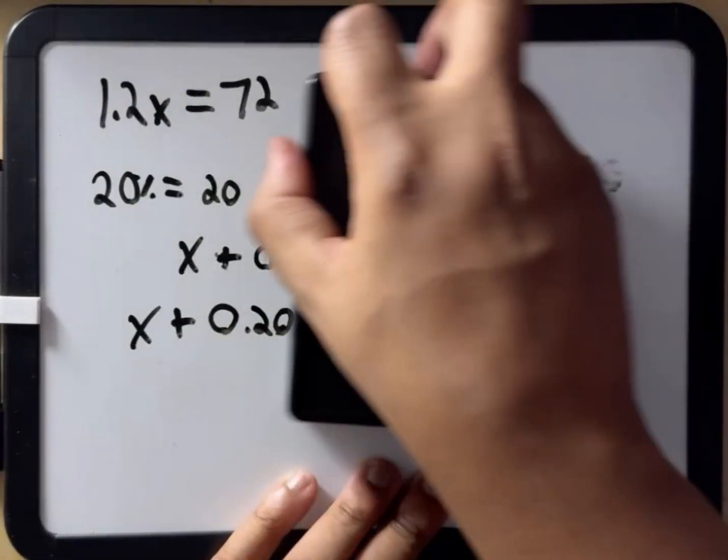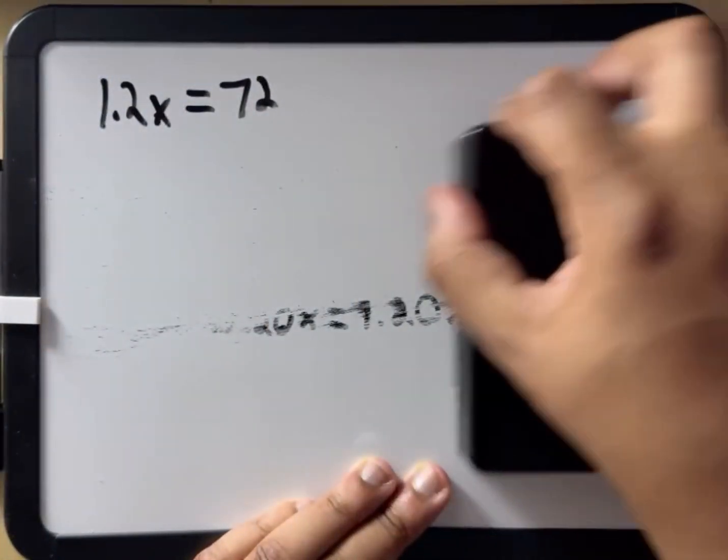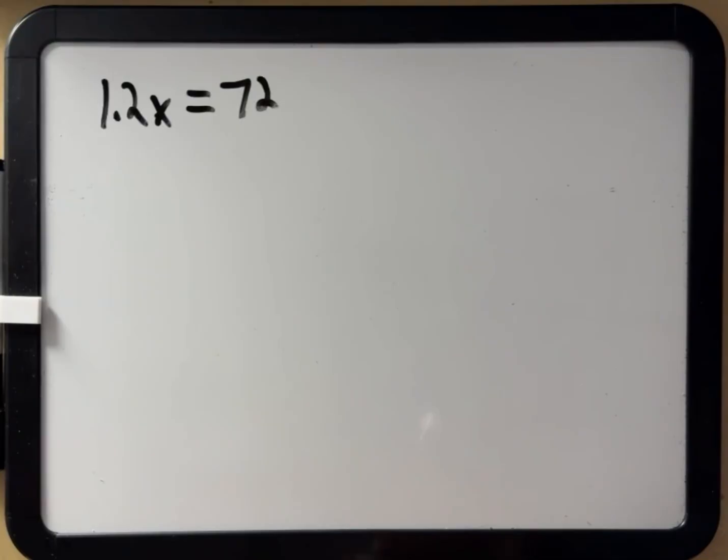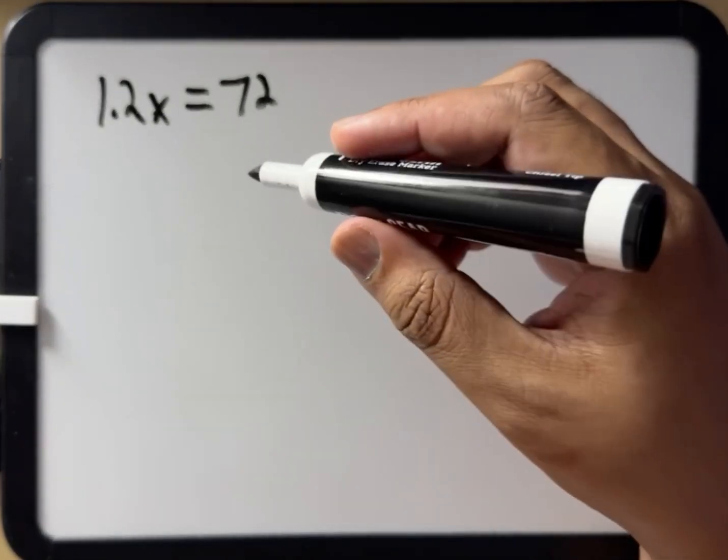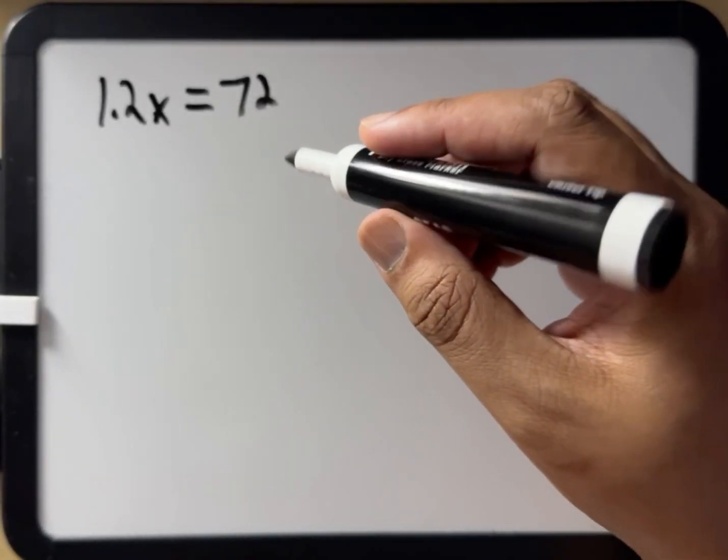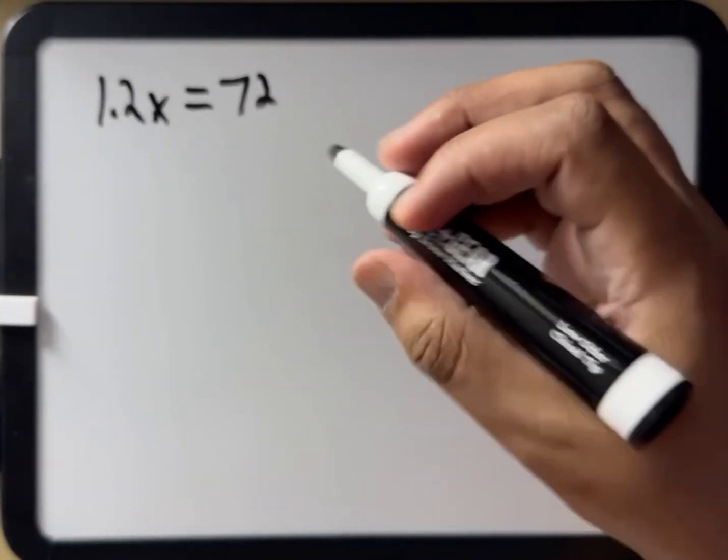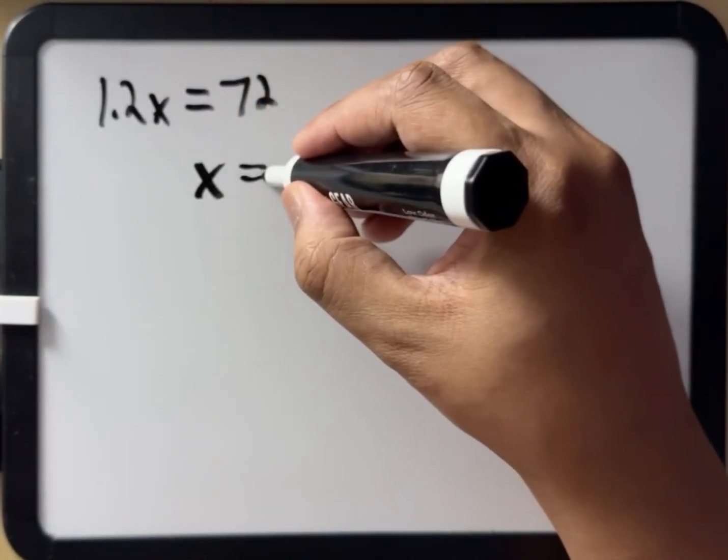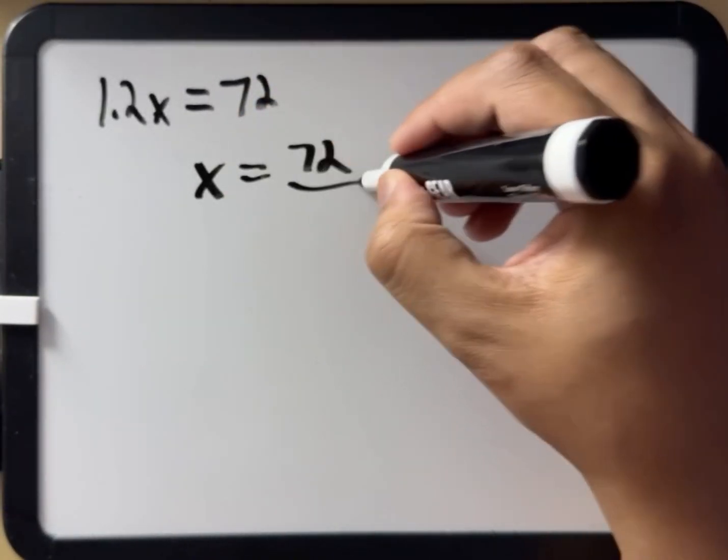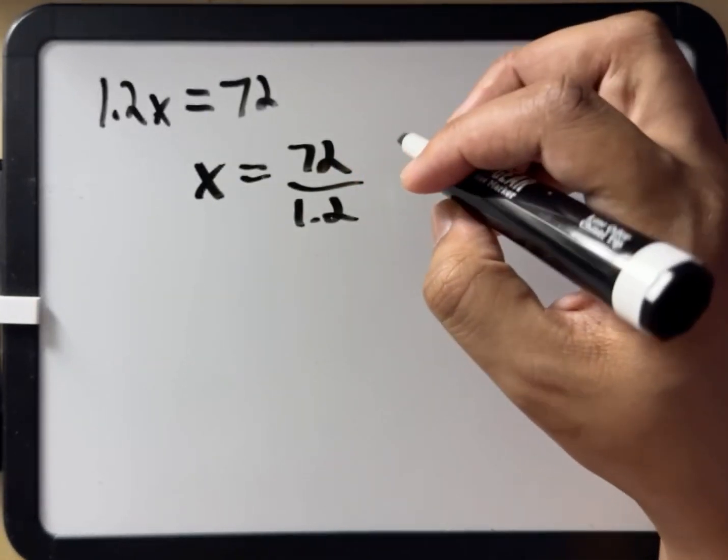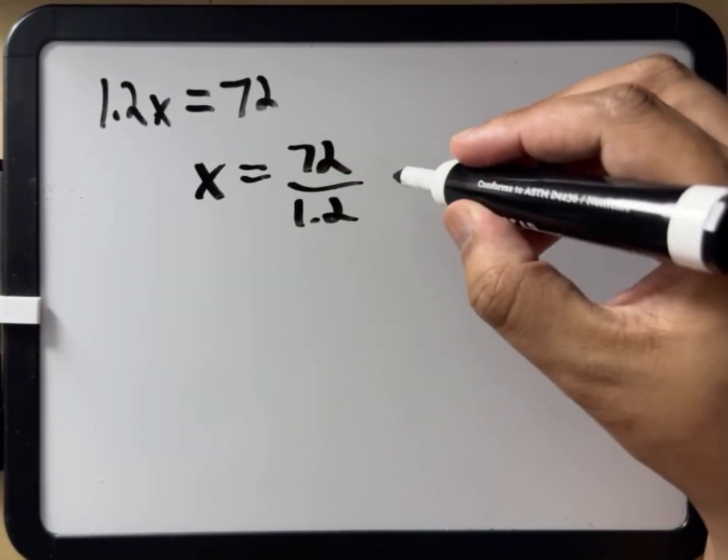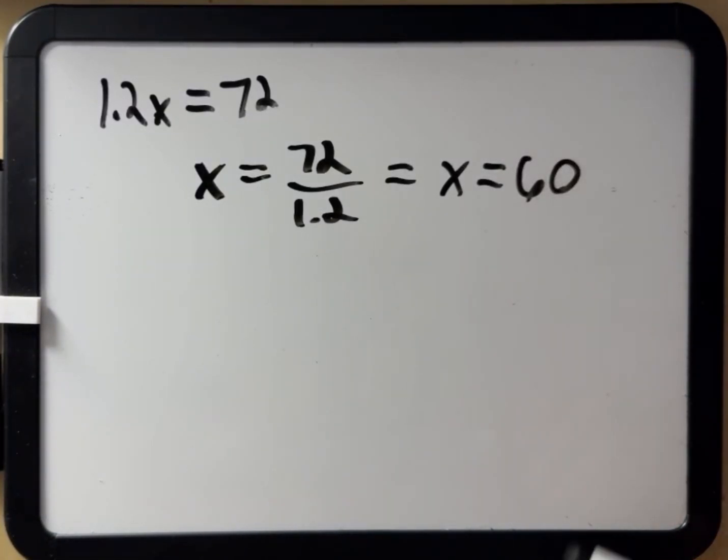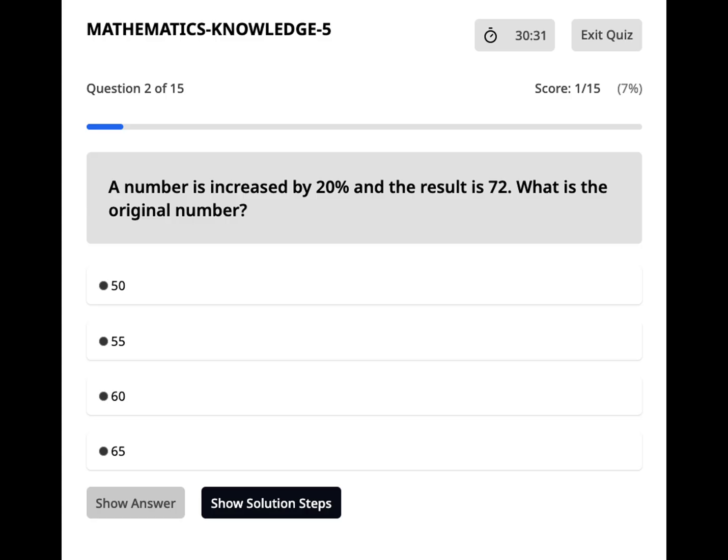So now we can get back to solving our problem. So for step three, we're going to go ahead and solve for x. We need to isolate x by dividing both sides by 1.2. So we have x equals 72 over 1.2. We do the division, which equals x equals 60. So the answer would be C, 60.